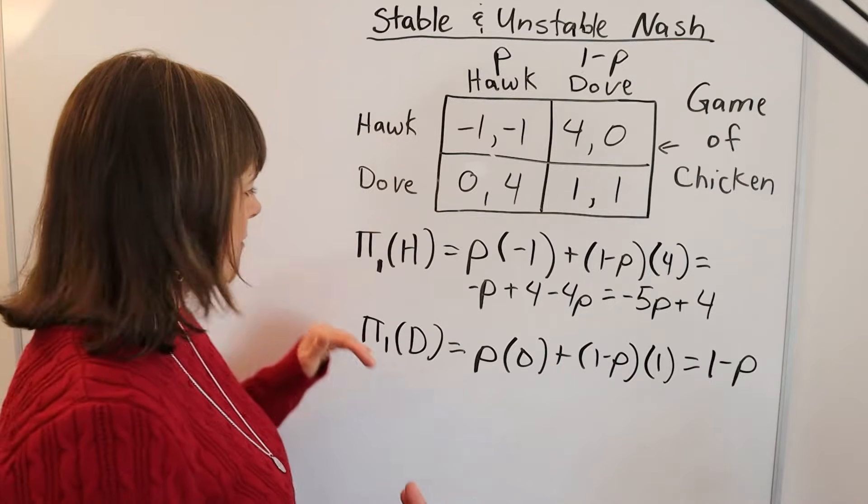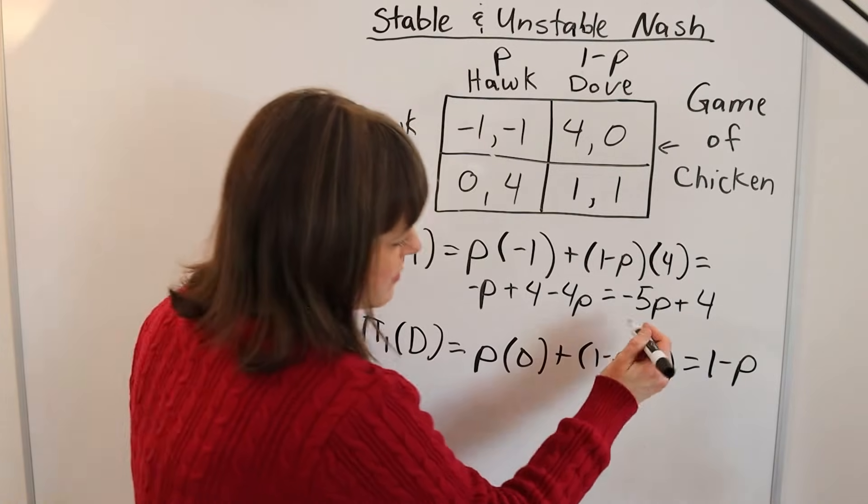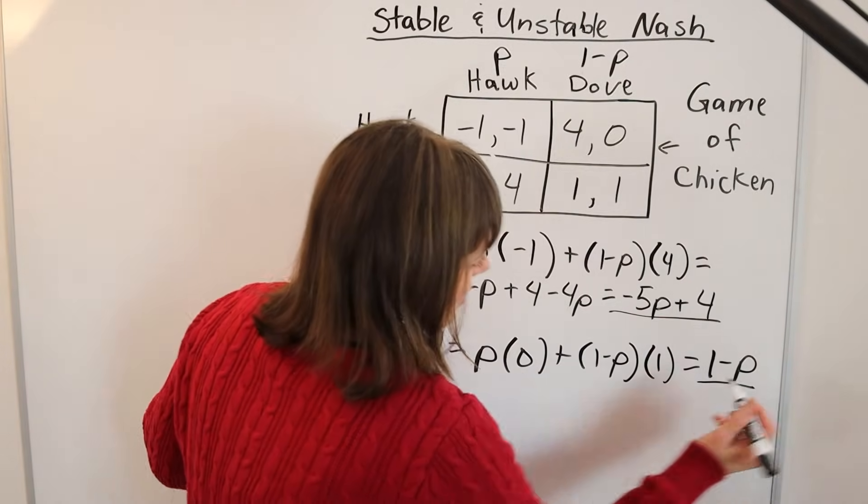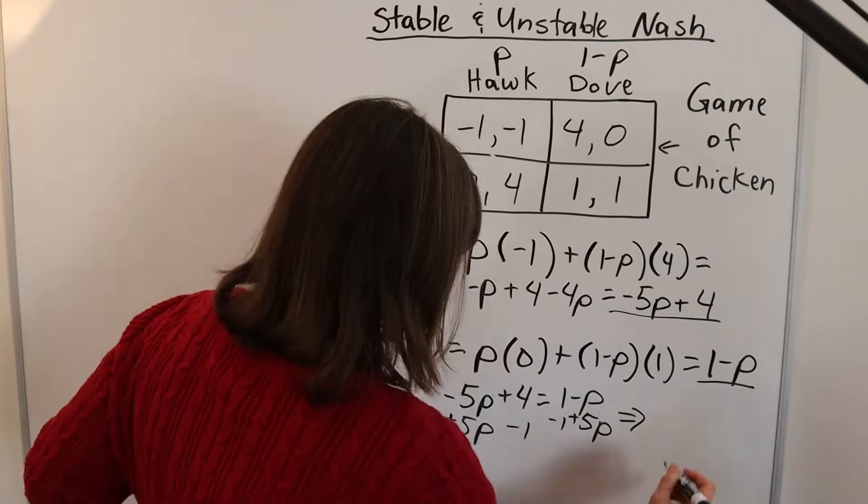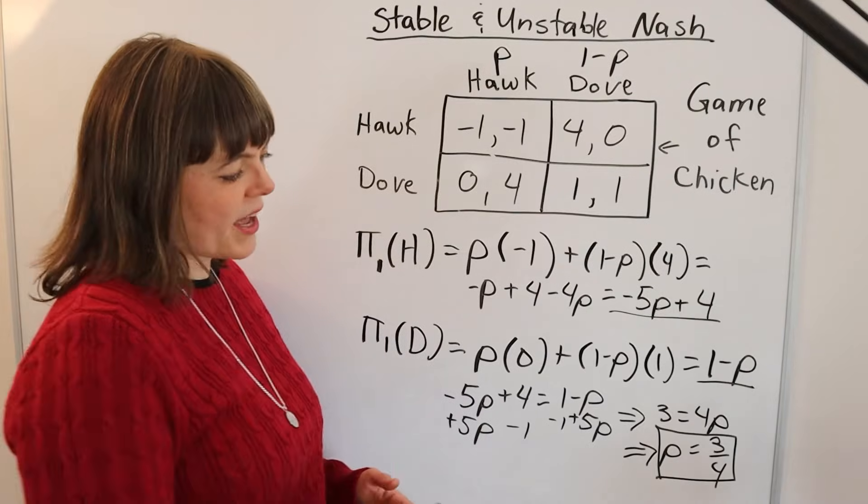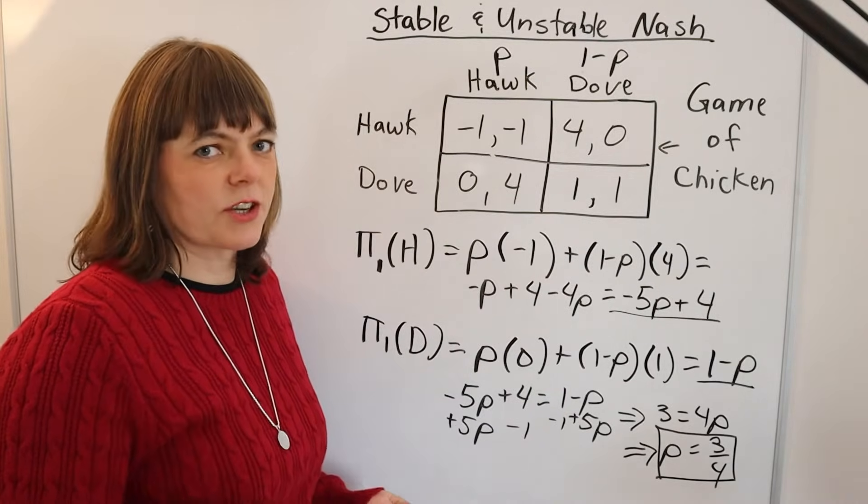Now, player one will be indifferent when the payoff from going Hawk equals the payoff of going Dove. So you simply set these two things equal and solve for P. When we do that, we get P equals three-fourths as the mixed strategy Nash equilibrium.